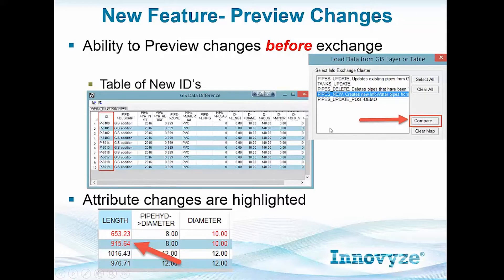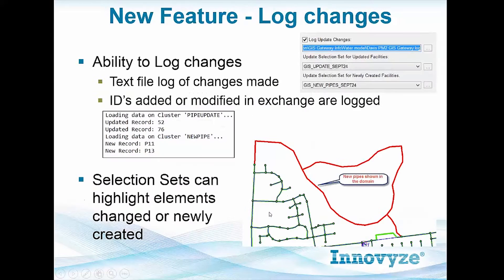And if you're doing an update and there are attribute changes — things like changing link diameter — it will highlight in red the attributes that are going to be updated by the exchange.